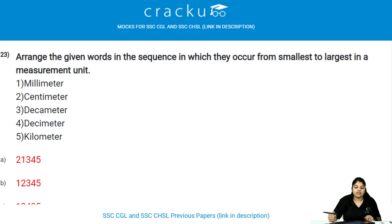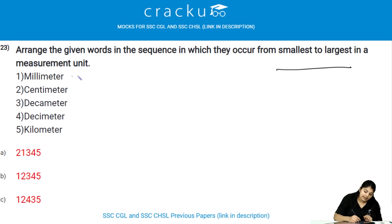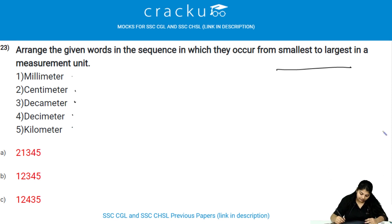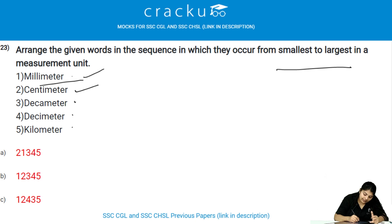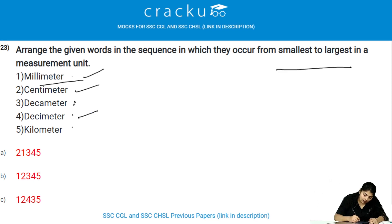Arrange the given words in sequence from smallest to largest measurement unit: millimeter, centimeter, decameter, decimeter, and kilometer. From smallest to largest: millimeter, then centimeter, then decimeter, then decameter, then kilometer. Therefore, the answer is option C.